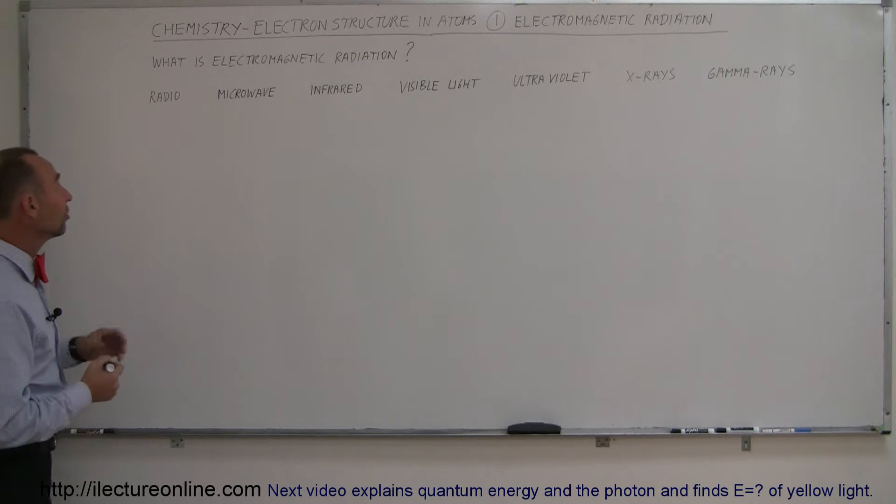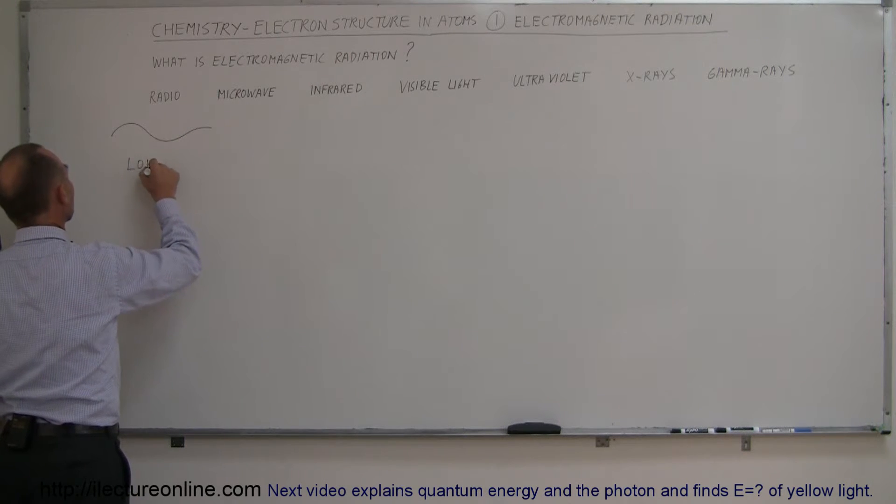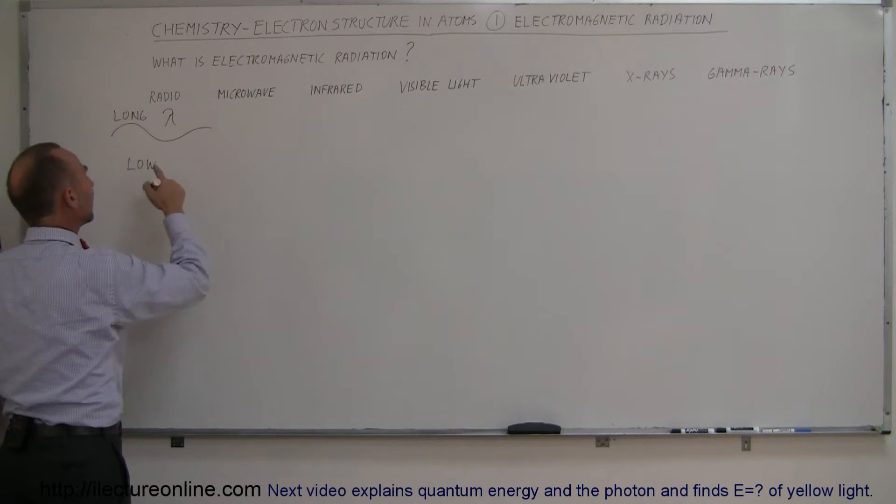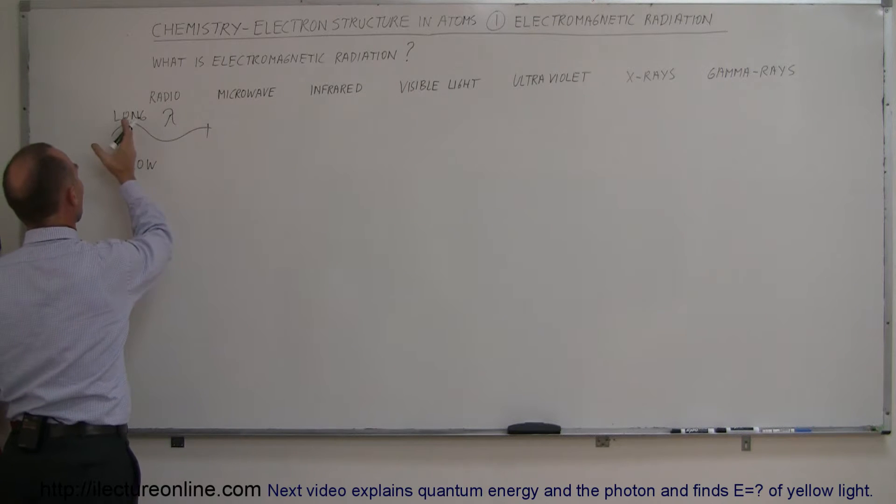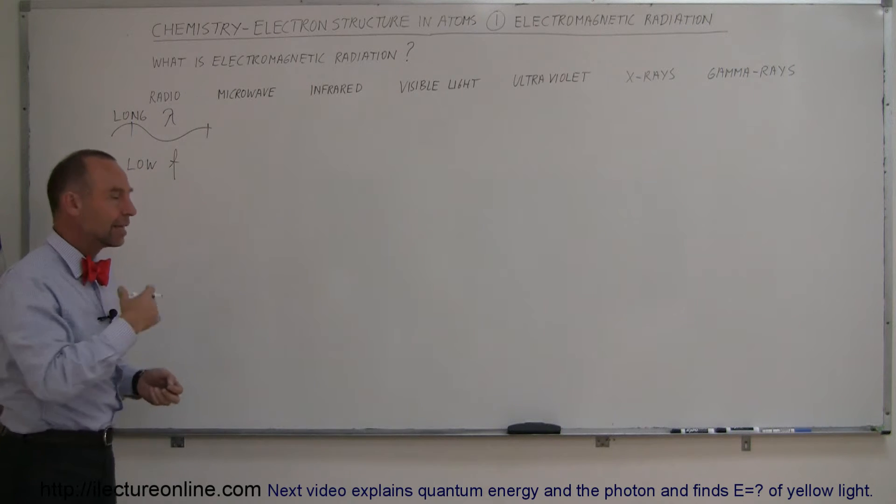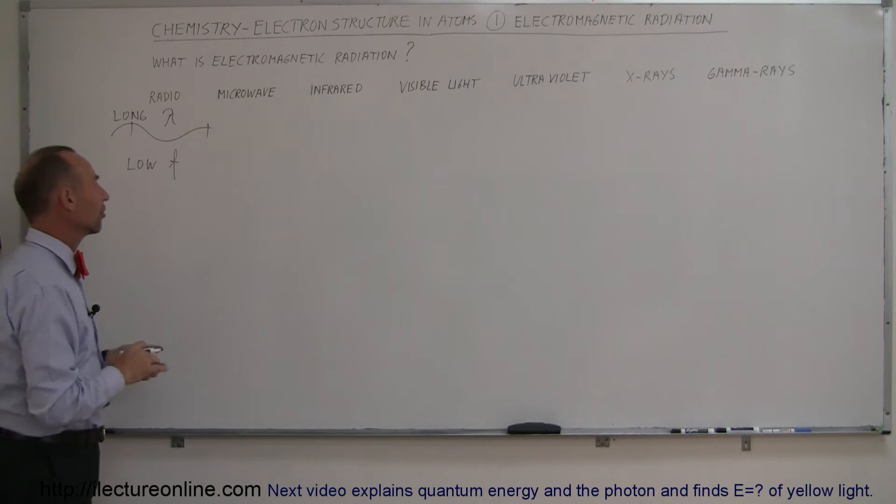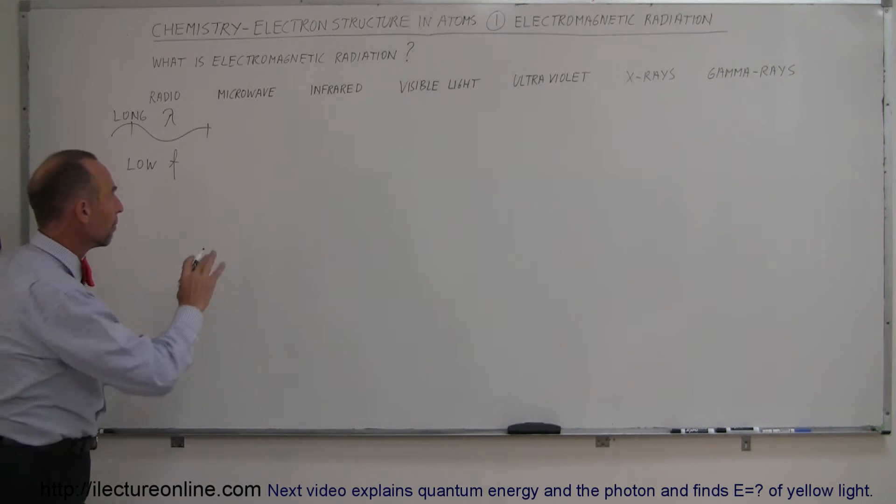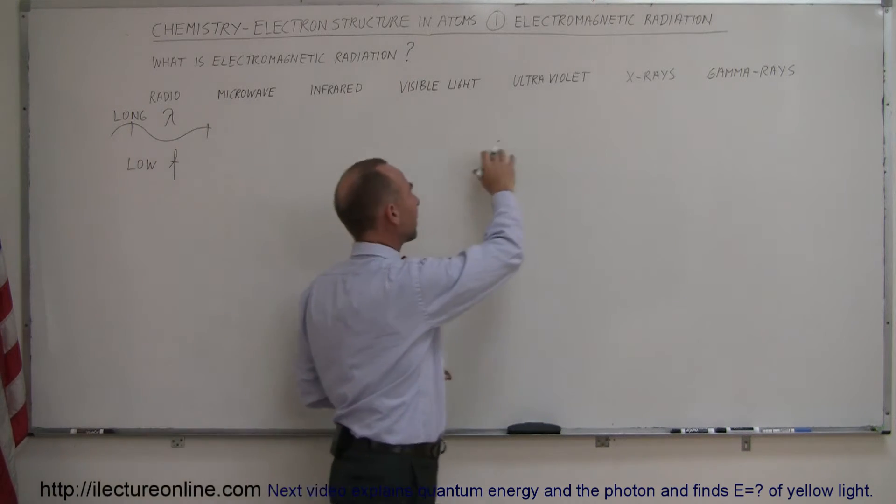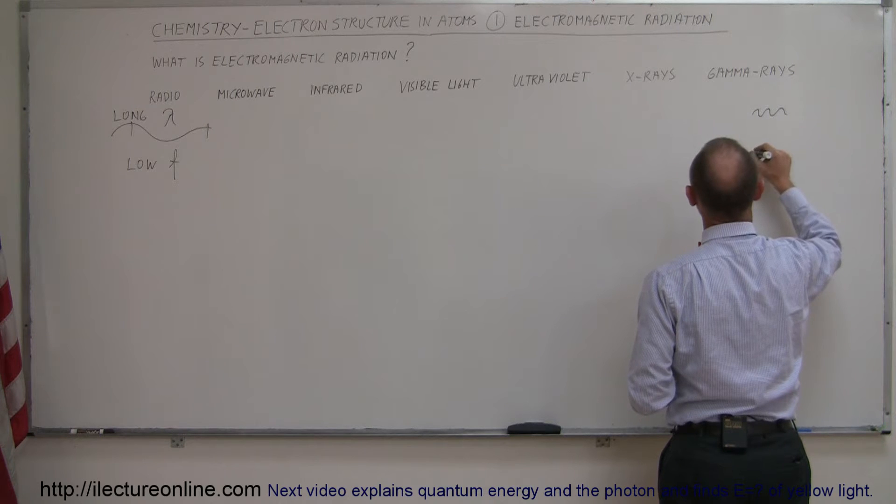What we might know about these things is that radio waves have very long wavelengths and very low frequencies. So long wavelengths, we use the lambda symbol to indicate wavelengths and that would be the length from the top of one wave to the maximum of the other wave. And it has low frequencies meaning that the radio waves come in at very low frequencies. Microwaves have shorter wavelengths, higher frequencies. Infrared, shorter wavelengths, higher frequencies and so forth. So by the time we get to gamma rays they have very very tiny wavelengths and very high frequencies.